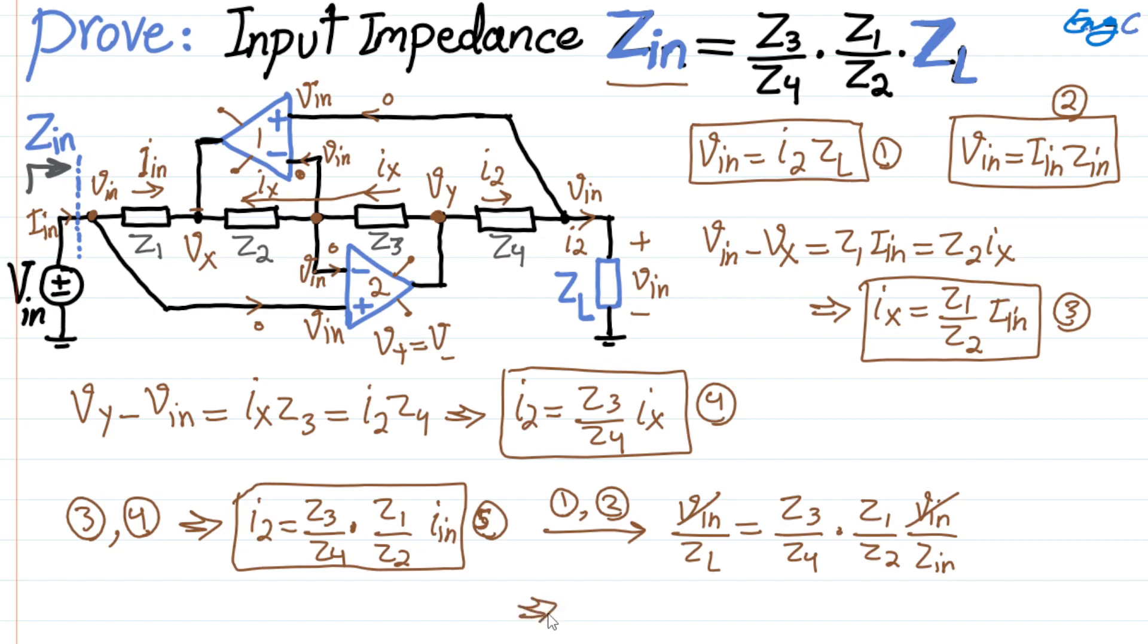and as a result, we get to what we wanted. So we get to Zin equal to Z3 divided by Z4 times Z1 divided by Z2 times Zl. And that's the final equation we were looking for to find. So this is the outcome we wanted.